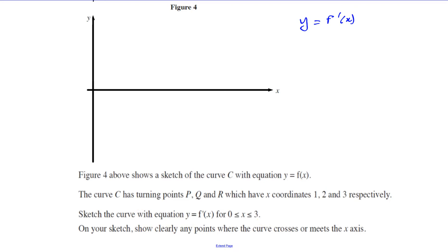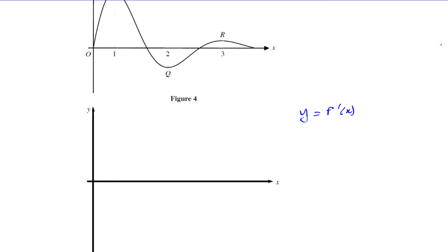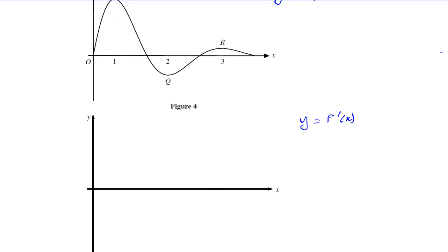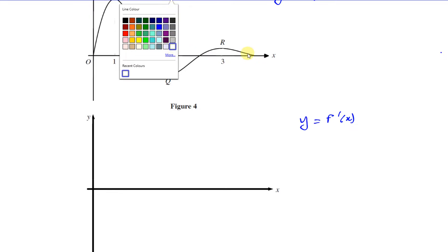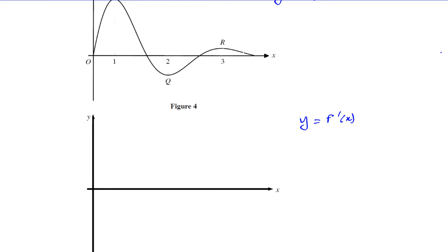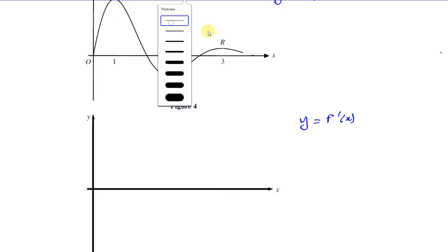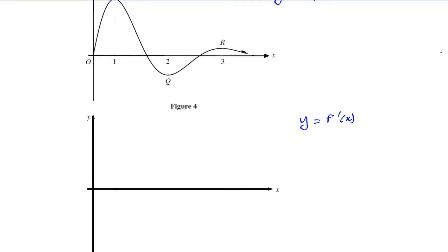I'm going to add something to this question to make it more interesting. I'm going to say that this part here is an asymptote — that on the side after x equals 3, the curve has an asymptote. I'm changing the question slightly so that this becomes an asymptote, just in case you get a question like that.